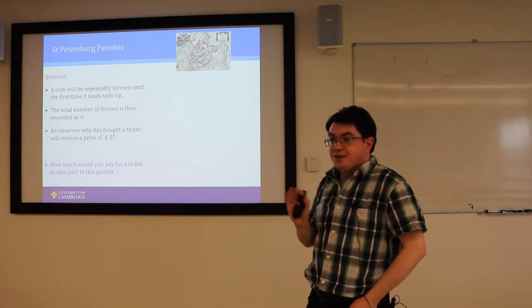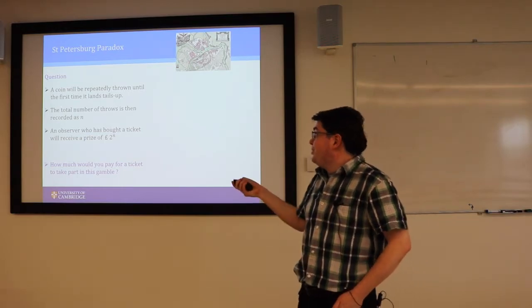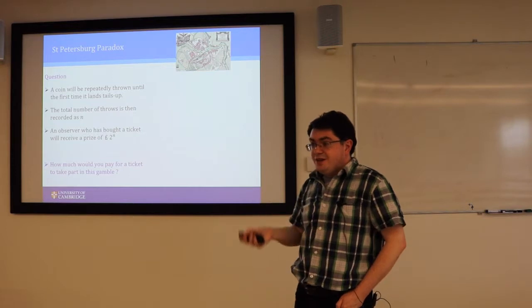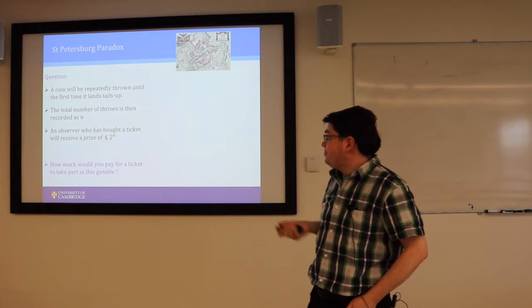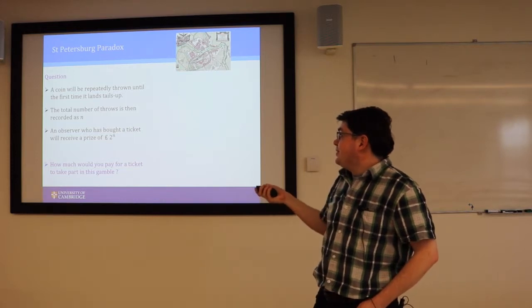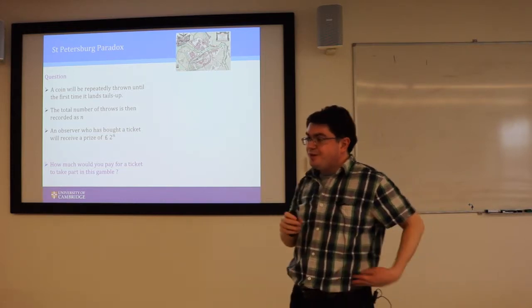And the puzzle is this. It's basically a crossword page puzzle. A coin is going to be repeatedly flipped until it stops, until the first time it throws a tail. And then when that's happened, the total number of throws is going to be counted and written down as N.